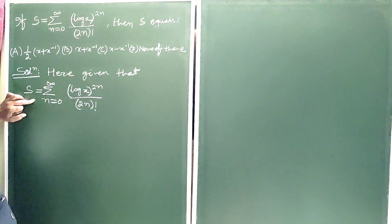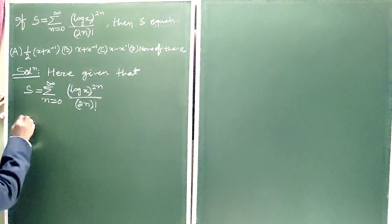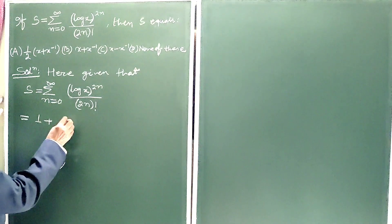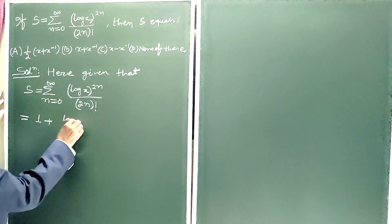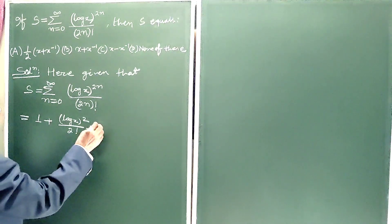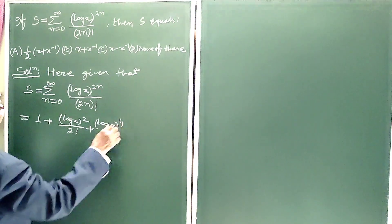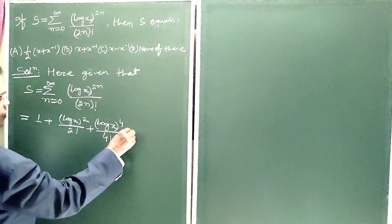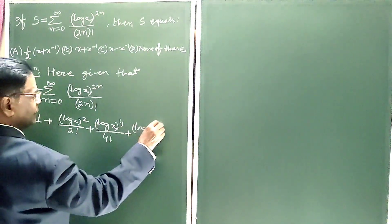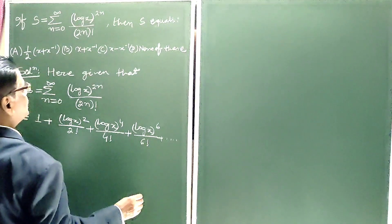Given that S equals summation from n equals 0 to infinity of (log x) to the power 2n divided by (2n) factorial. Putting n equals 0, this term is 1. Putting n equals 1, it is (log x) squared by 2 factorial. Putting n equals 2, it is (log x) to the power 4 by 4 factorial. Putting n equals 3, it is (log x) to the power 6 by 6 factorial, plus dot dot dot up to infinity.